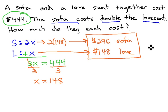As you can see, we now have a sofa for $296, a love seat for $148, where the sofa costs double the love seat, but together they cost $444.